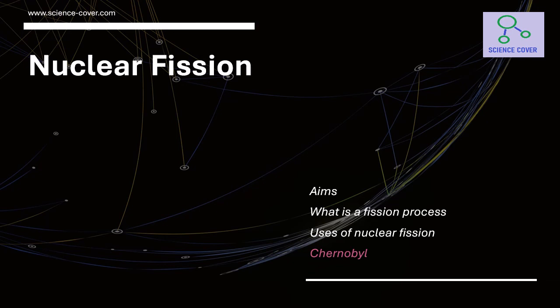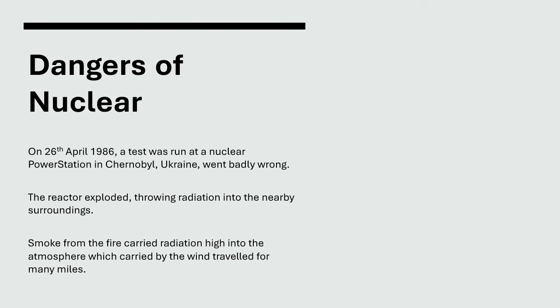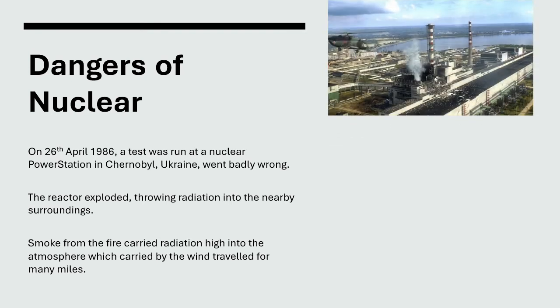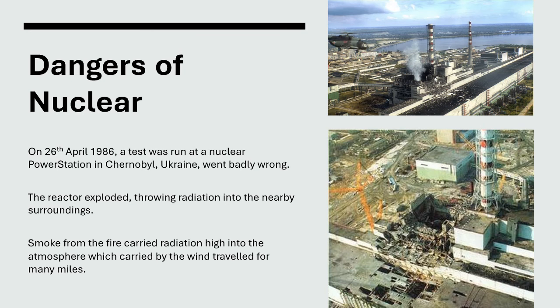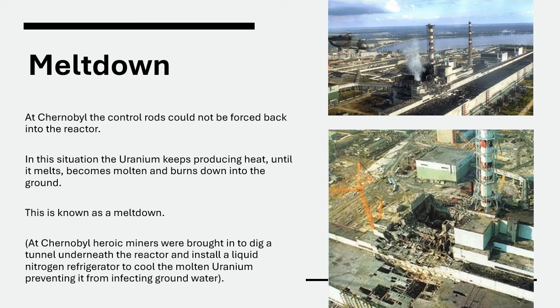Finally, let's look at what happened during the Chernobyl incident. On the 26th of April 1986, a test was run at the nuclear power station in Chernobyl in the Ukraine, which went badly wrong. The reactor exploded, throwing radiation into the nearby surroundings. The reactor caught fire and the smoke carried radiation high into the atmosphere, which was then carried by wind and travelled for many miles. At Chernobyl, the control rods could not be forced back into the reactor, meaning the reactor kept producing heat until the uranium melted into molten form and burned down into the ground — this is called a meltdown.